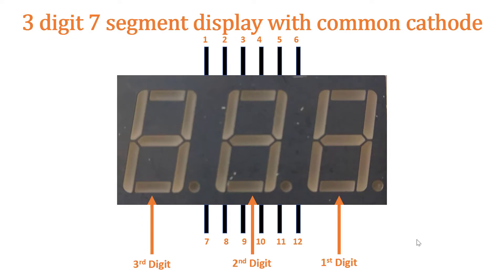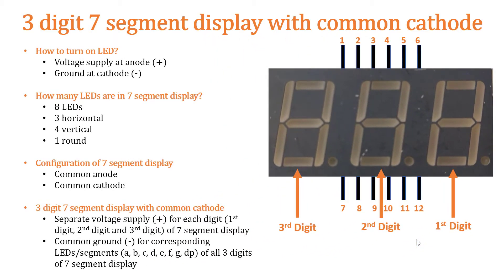So this is the 3-digit 7-segment display with common anode and all the required pin information and labeling. If we want to turn on an LED, we have to provide a voltage supply and ground. In a 7-segment display, we have a total of eight LEDs — three horizontal LEDs, four vertical LEDs, and one round LED. In 7-segment displays with more than one digit, they come in different configurations. The most commonly used configurations are common anode and common cathode.